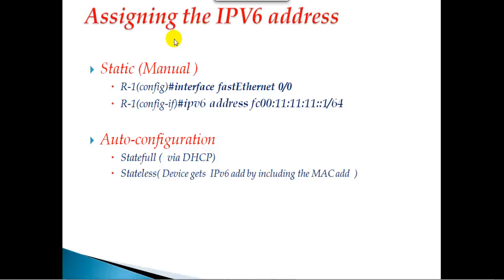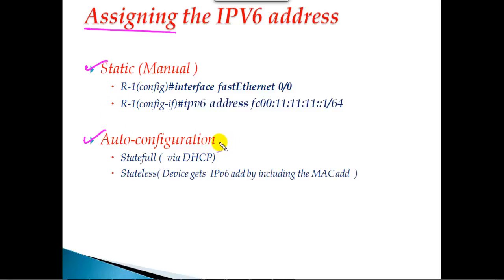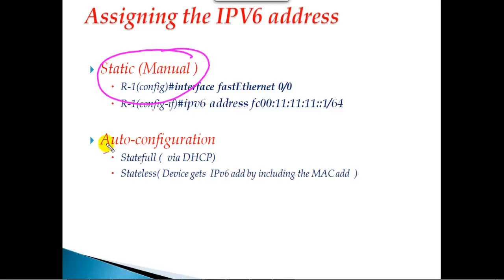In this section we'll see how to configure an IPv6 address on a router interface. Just like IPv4, we can assign the IP address either through manual configuration, which we call static, or we can use auto-configuration. With auto-configuration, the device gets the IPv6 address assigned automatically, whereas with static we go to the interface and assign the IPv6 address manually. In this section our main focus will be on static manual configuration.